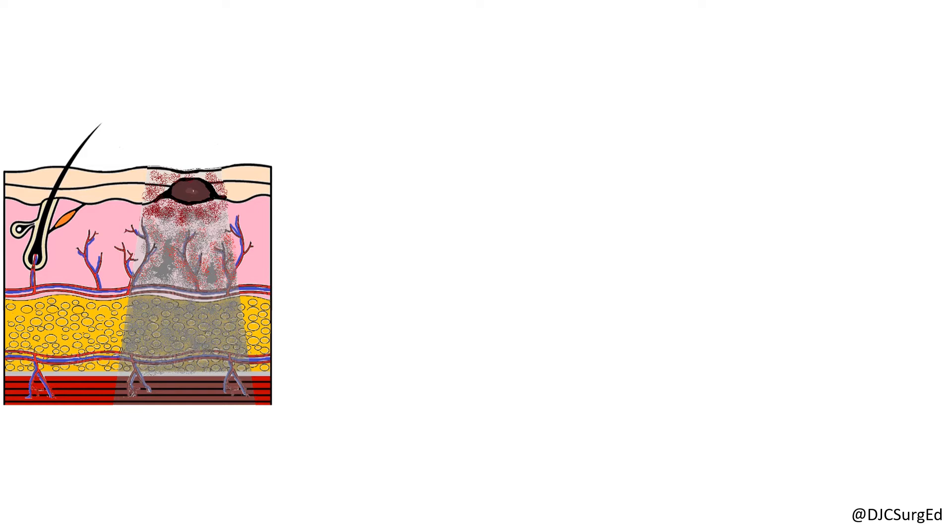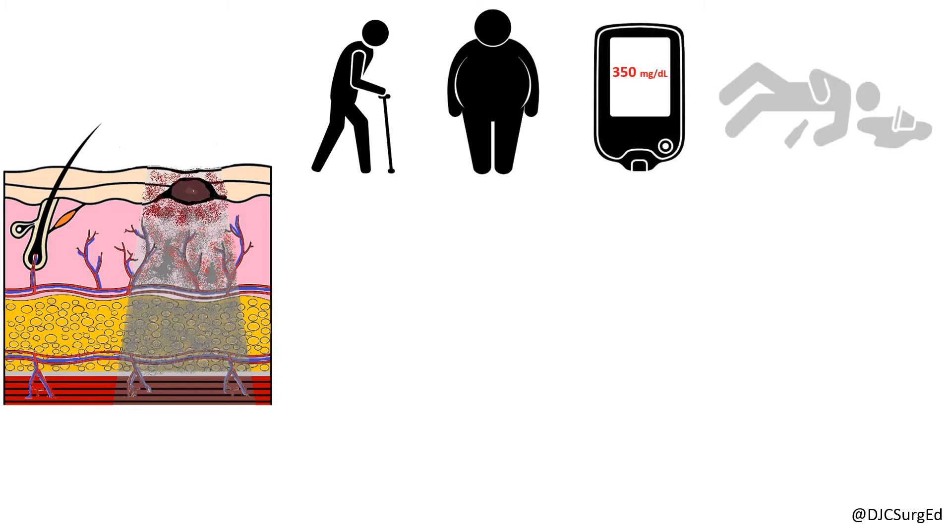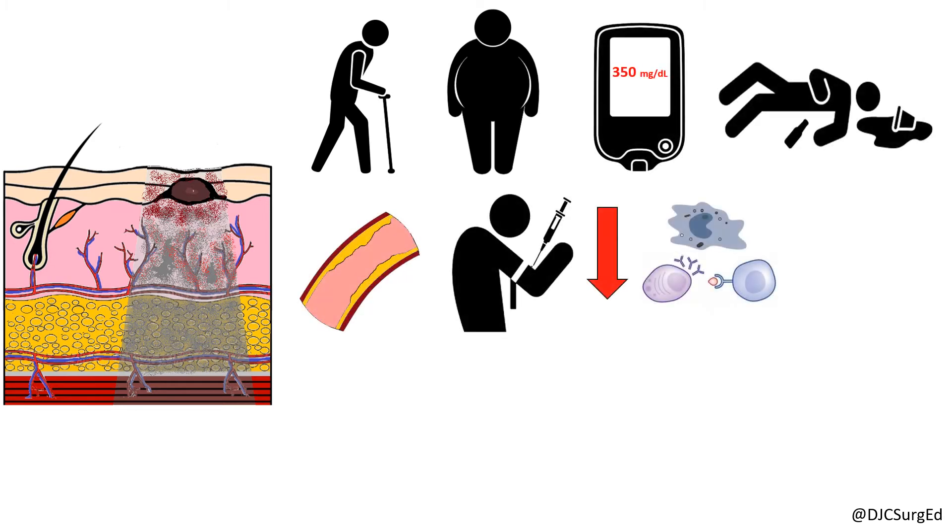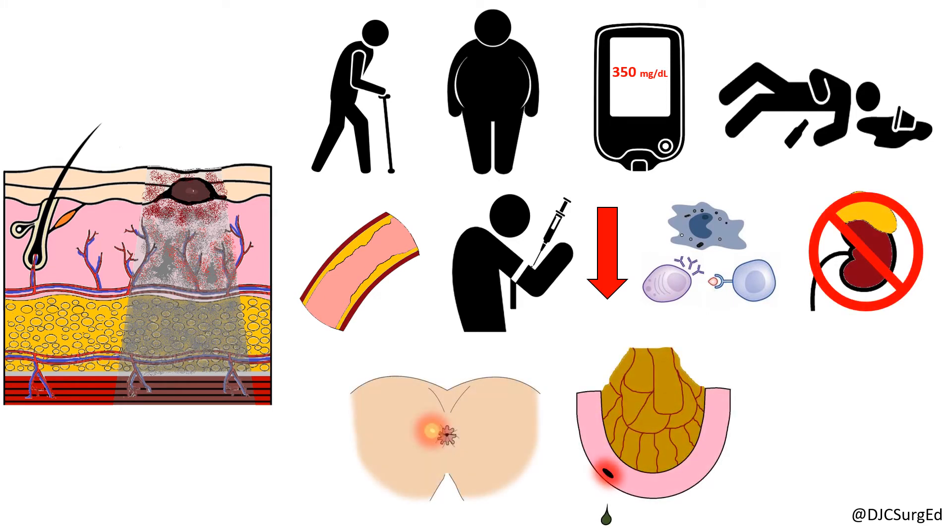Certain comorbidities and risk factors may predispose patients to this disease, including advanced age, obesity, diabetes, alcoholism, vasculopathy, IV drug use, immunosuppression, end-stage renal disease, perirectal abscess, perforated viscous, and recent surgery.